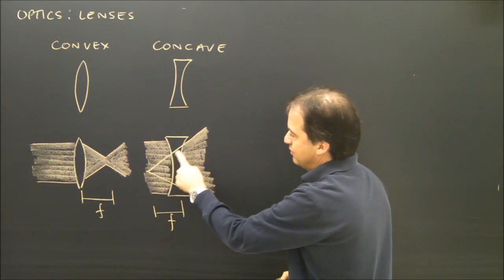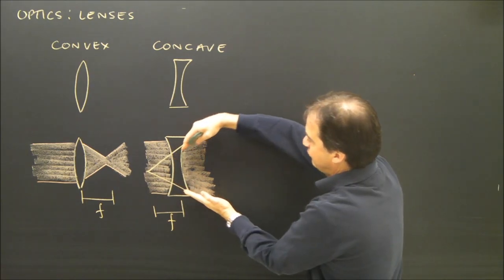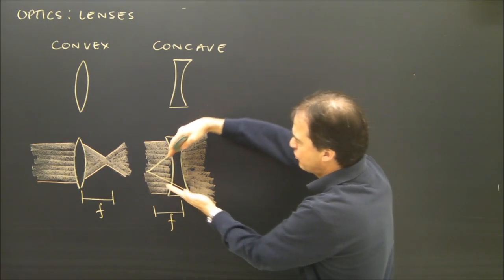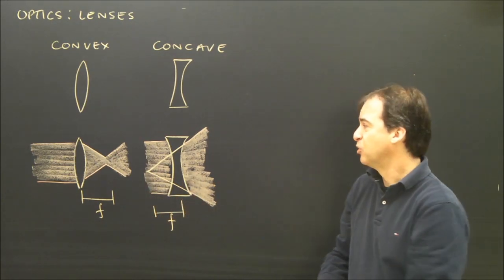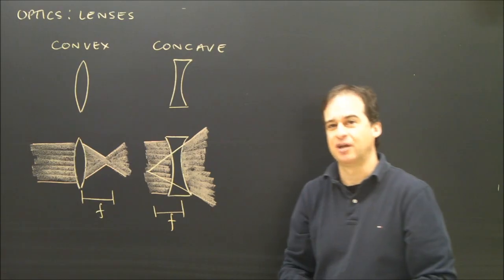What we really have to do is trace back this line. Where the light diverges, you trace back, and where that point is, that's the focal length from the center of the lens. So we also have a number that describes this type of lens.